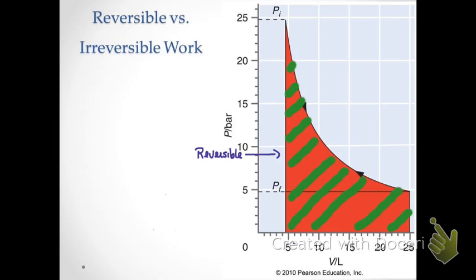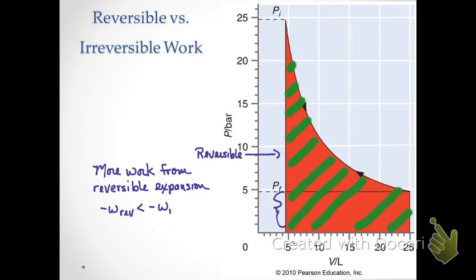The area associated with the reversible process — indicated by the green hash marks — is clearly much greater than the rectangular area of the irreversible process. Therefore, reversible expansion yields more work than irreversible expansion. For engineers designing an engine to generate maximum work with greatest efficiency, the process should be as close to reversible as possible. While a truly reversible process is impossible, we design systems to approach it as closely as we can.